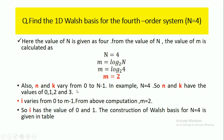n and k vary from 0 to N-1. Since N=4, the n and k values vary as 0, 1, 2, and 3 (i.e., 0 to 4-1 = 3). Also, i varies from 0 to m-1. Since m=2, i varies from 0 to 1, that is i takes values 0 and 1.